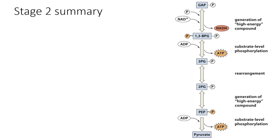Let's summarize Stage 2. We started with two three-carbon GAP molecules, went through several steps including reversible reactions forming high-energy compounds, carried out substrate-level phosphorylation twice — from 1,3-BPG to 3-PG (Step 7) and from PEP to pyruvate (Step 10) — with a rearrangement step involving the 2,3-BPG intermediate. The one irreversible step in Stage 2 is the final pyruvate kinase step. The net result of all of glycolysis is two NADHs and two net ATPs per glucose molecule.